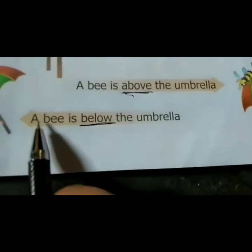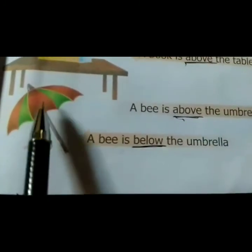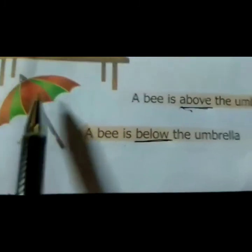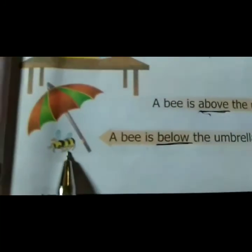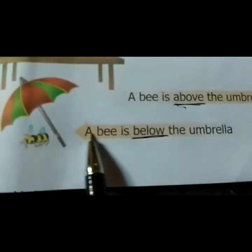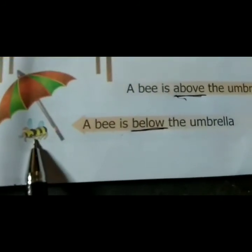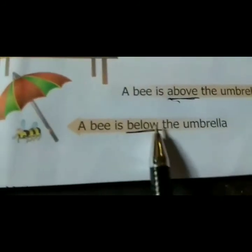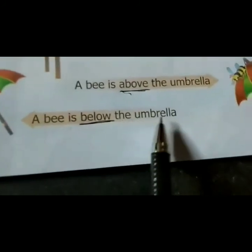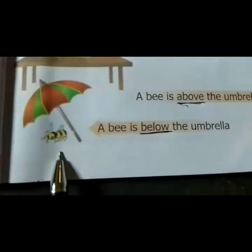A, B is — so where is B? Look here. This is the umbrella and this is B. That means this B is below the umbrella. Below the umbrella.